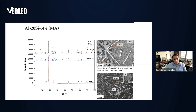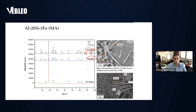Here we start with the XRD analysis. This is the ingot as-cast, and this is a 2 mm suction cast rod. As you can see, as the solidification rate increases, there are some phases that tend to basically disappear. This is silicon — eutectic silicon — and some alpha aluminum. This is for the ribbons, which are produced by melt spinner with a cooling rate of about 1 million Kelvin per second.